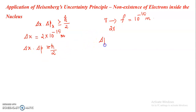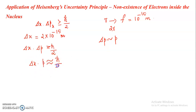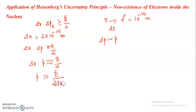From the uncertainty principle, delta x times delta p is greater than or equal to h-cross by 2, where delta p is the uncertainty in momentum. The uncertainty in momentum is of the order of the momentum p. So we can write delta x times p approximately equal to h-cross by 2, giving p approximately equal to h-cross divided by 2 delta x.